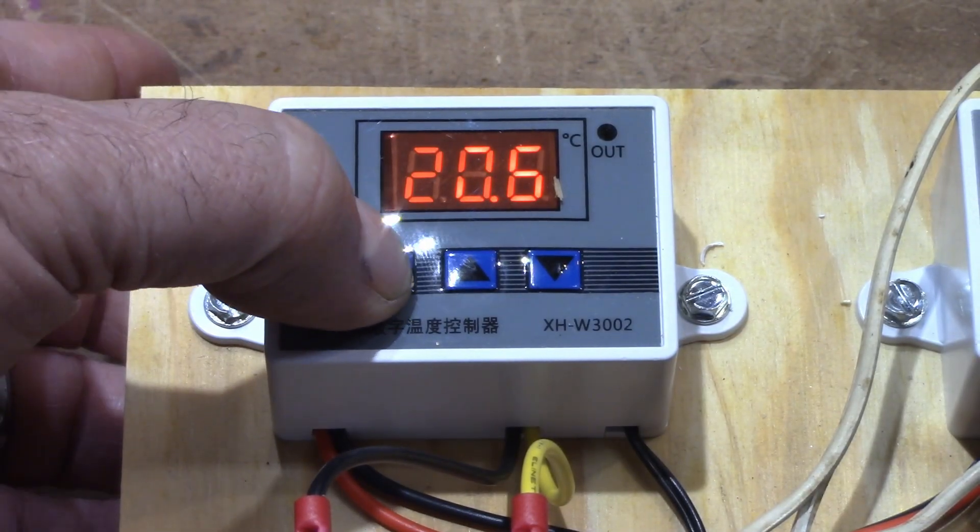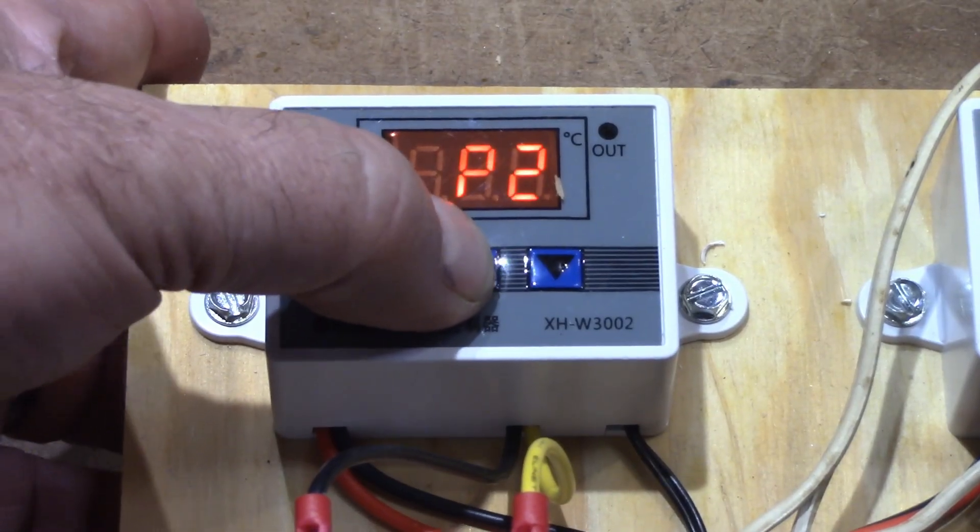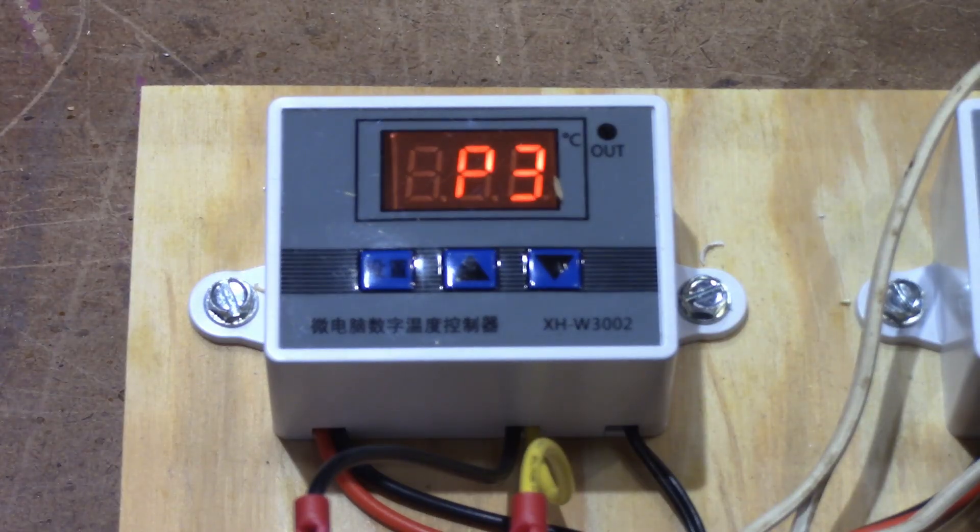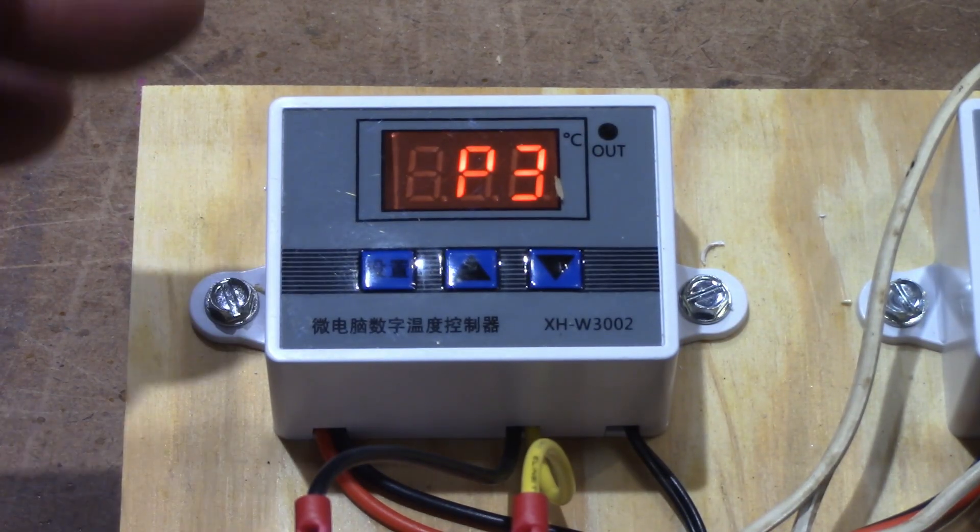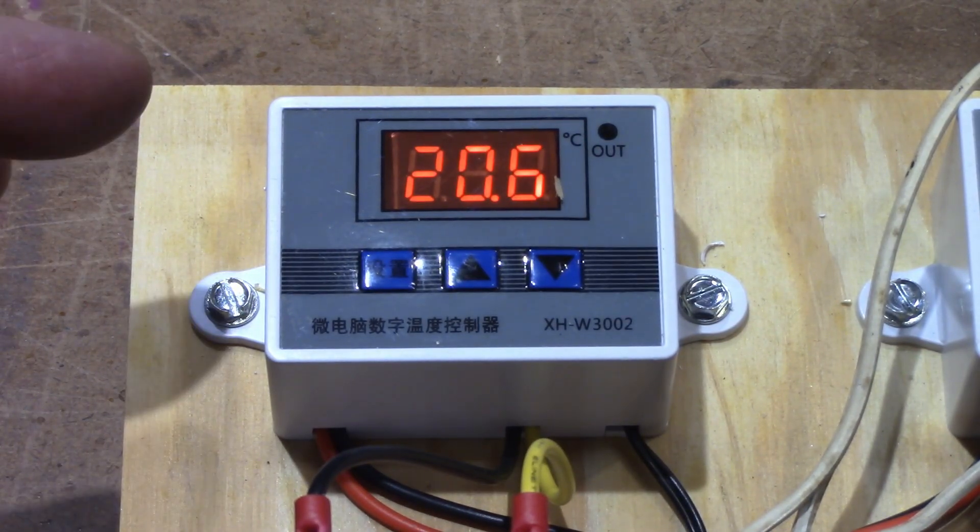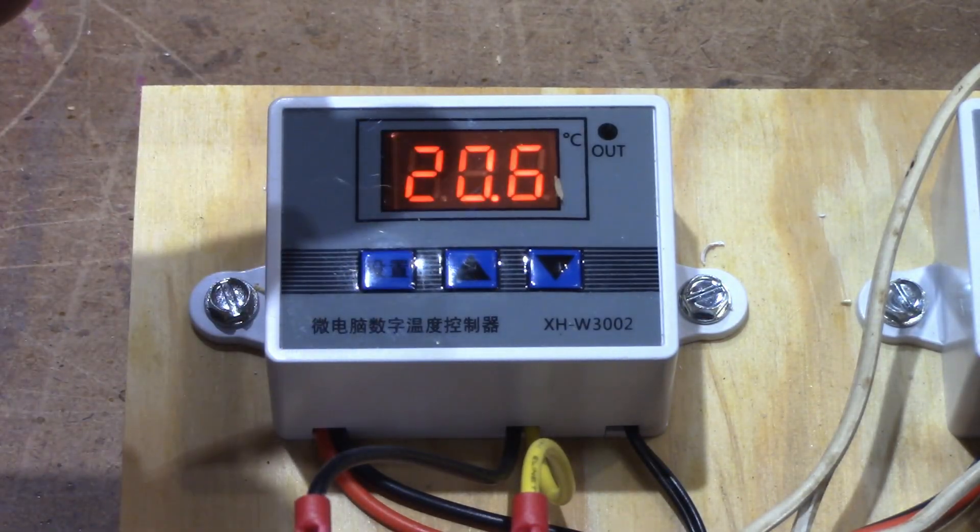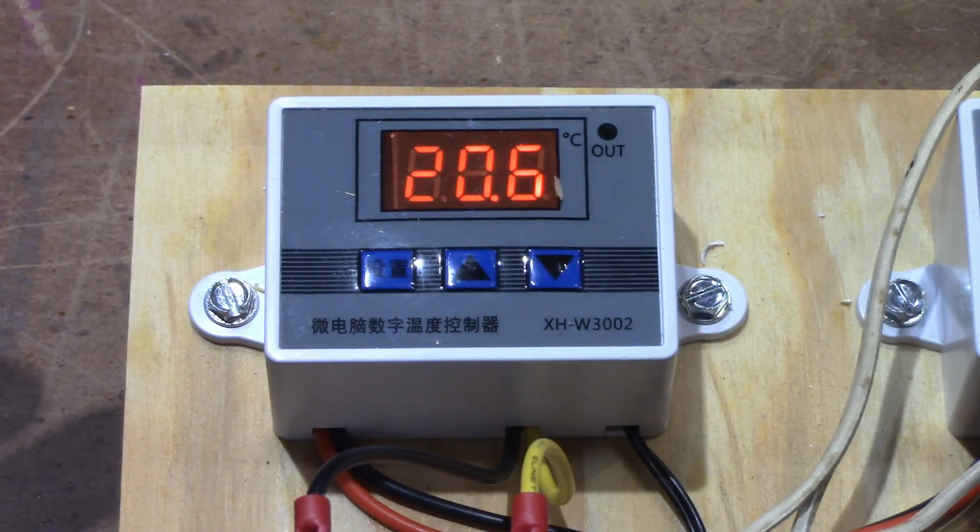And then there's also P3, and P3 is an on delay time. So what you can do with that is if this thing is kind of flipping on and off, on and off, because the temperature is hovering right around there, you can tell it to delay.